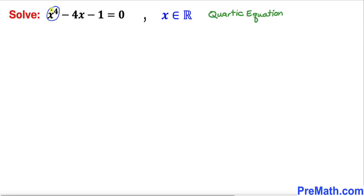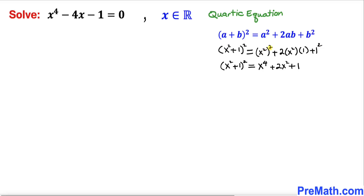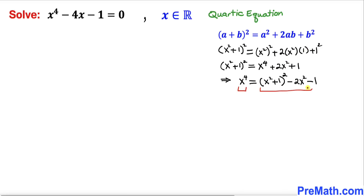The first thing we are going to do — since we are dealing with power 4 — is manipulate this equation. Let's recall the famous identity (a + b)². If we assume a = x² and b = 1, then (x² + 1)² = x⁴ + 2x² + 1. We can isolate x⁴ by moving 2x² and 1 to the other side, so x⁴ = (x² + 1)² - 2x² - 1.